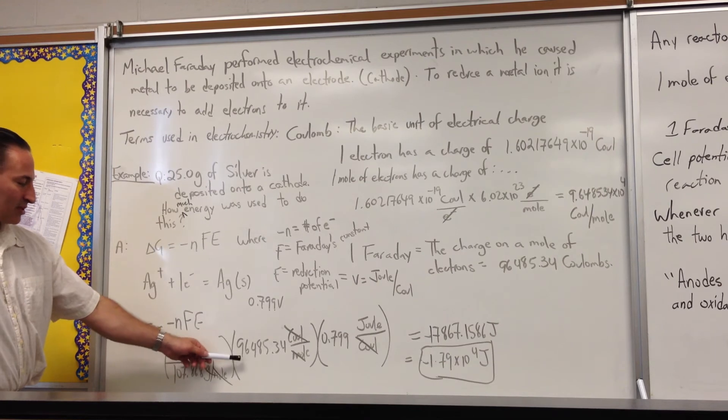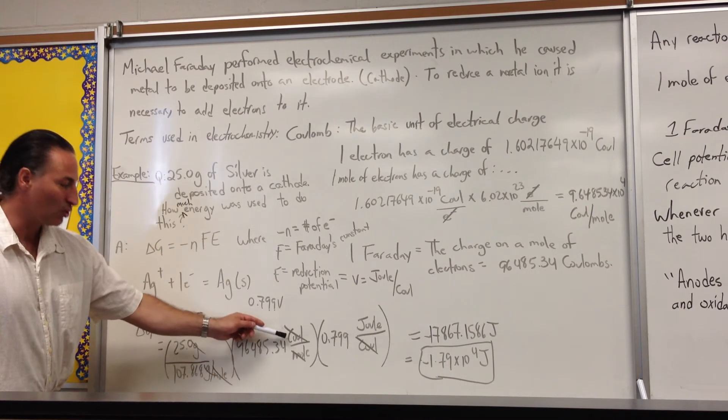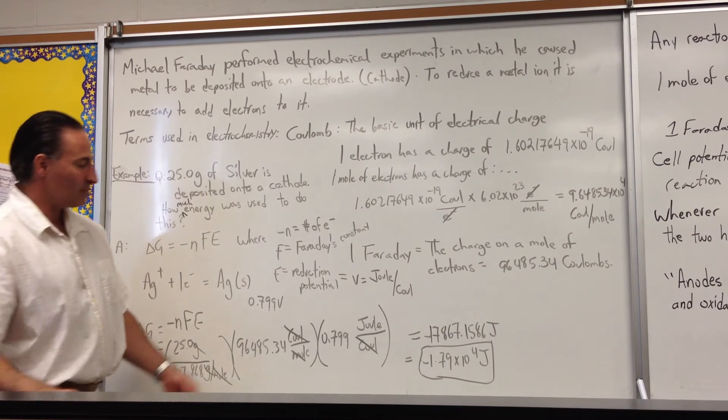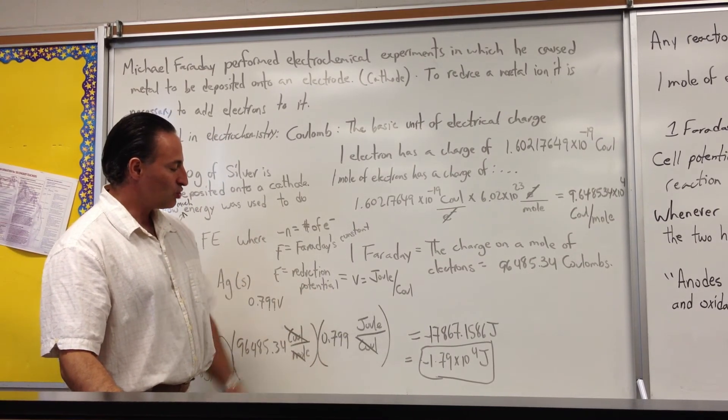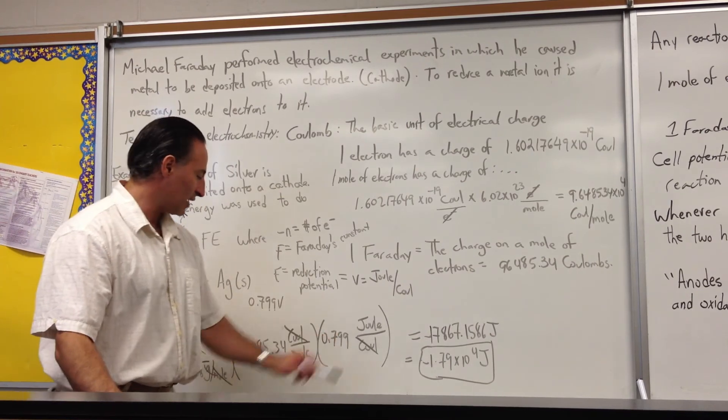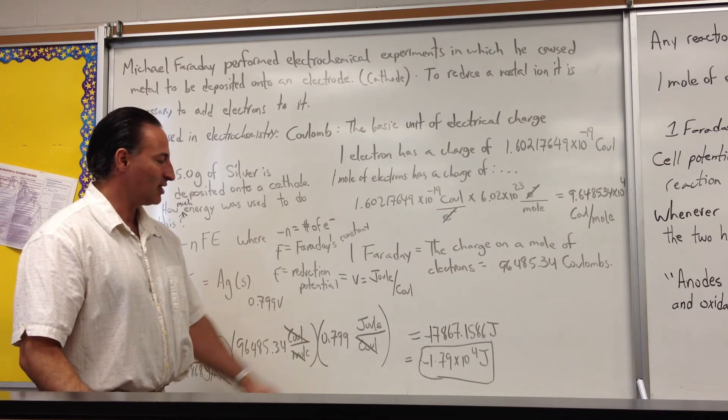F, which is 96,485 Coulombs per mole, times the voltage for that reaction, 0.799 joules per Coulomb. You'll see that Coulombs cancel, moles cancel, and grams cancel, so the only unit left is joules.